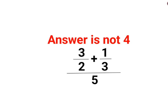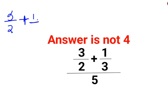In fractions, what we do is first sort out the numerator. So we have 3 upon 2 plus 1 upon 3. At this point it is very important to realize that in fractions, addition can only happen if the denominators are the same.